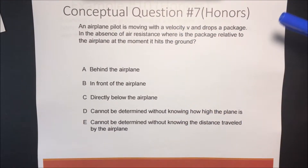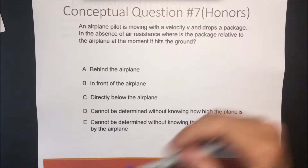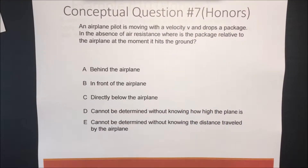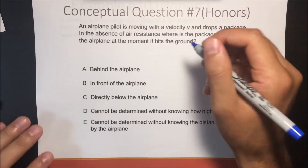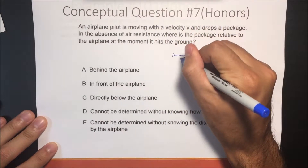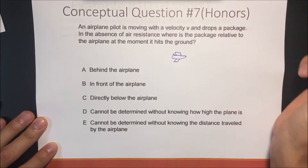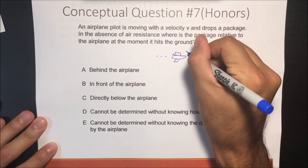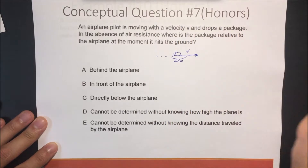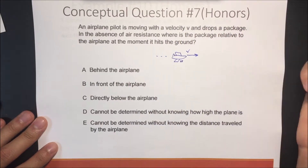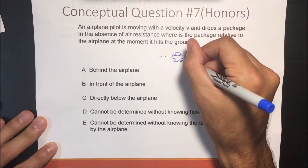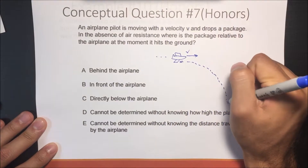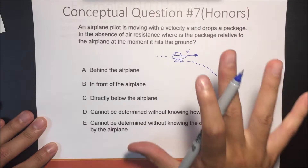An airplane pilot is moving with a velocity V and drops a package. In the absence of air resistance, where is the package relative to the airplane at the moment it hits the ground? So there's an airplane flying with the speed of V, and then it drops a package. When it drops this package, if there's no air resistance, the package is going to move in a parabolic path if someone is looking at it from an objective point of view.